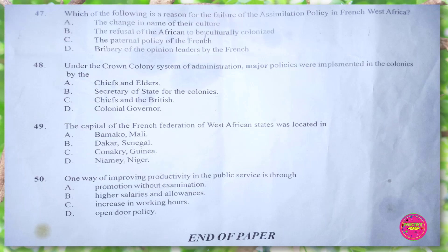Question 49. The capital of the French Confederation of West African States was located in: A. Bamako, Mali, B. Dakar, Senegal. The correct answer is B. Dakar, Senegal.